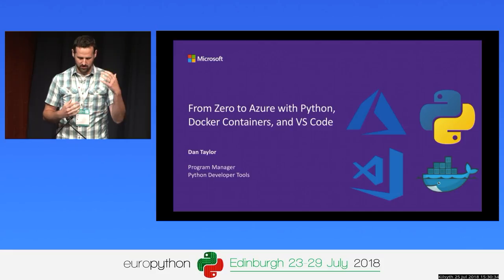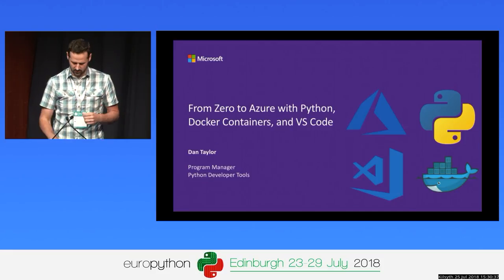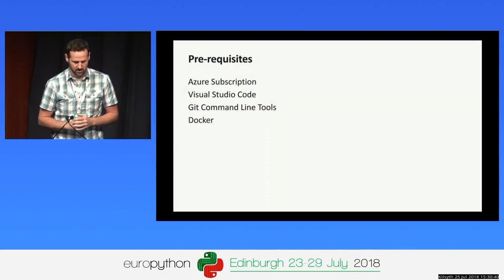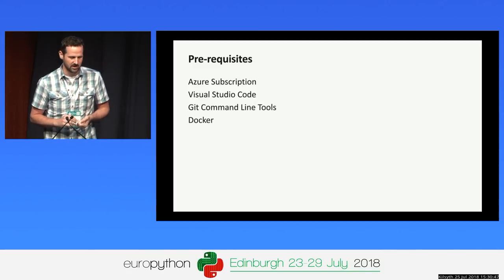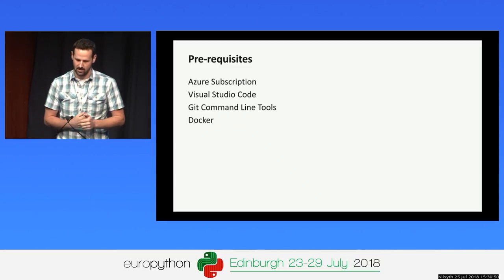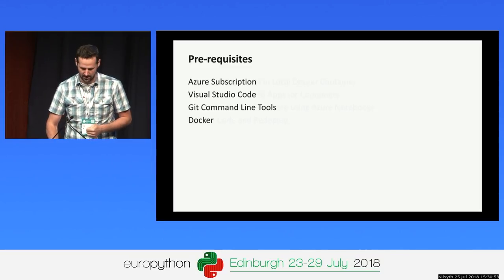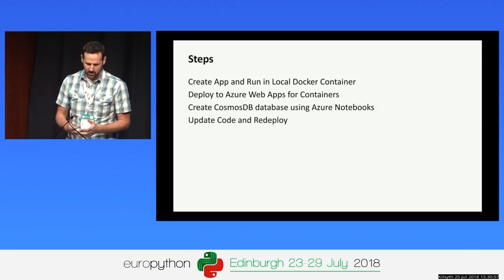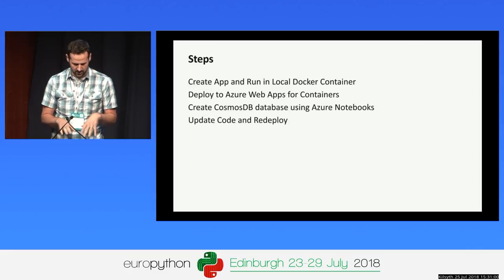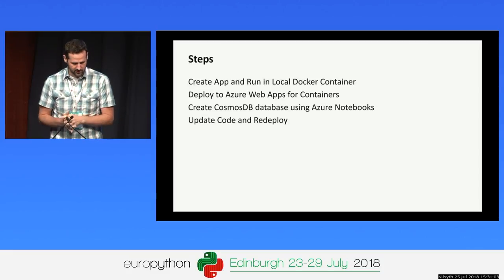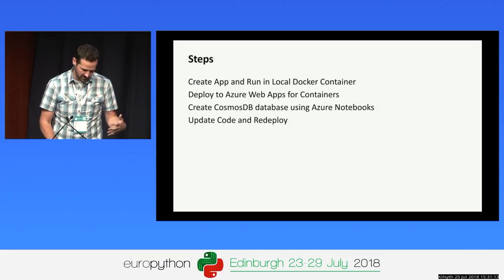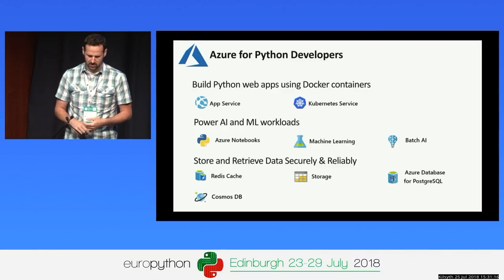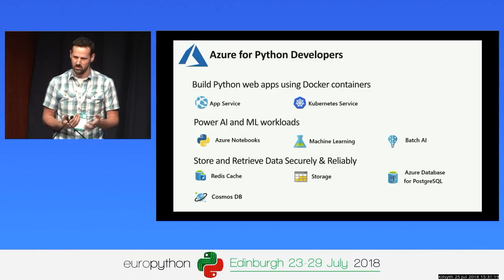Together with Azure and Visual Studio Code, you get a really productive developer experience. I'm basically going to show how we start with just these prerequisites here on the screen: an Azure subscription, Visual Studio Code, Git command line tools, and Docker — how you can deploy an app starting from basically a command line. We're going to create an application, run it in a local Docker container, deploy it to Azure Web Apps for Containers using VS Code, add some data to a Cosmos DB database using Azure Notebooks, and then update the code and redeploy it. Here's a quick summary of some of the key services in Azure that you might be thinking of if you're a Python developer.